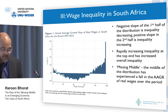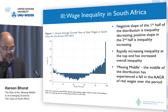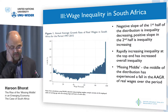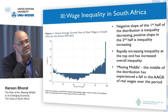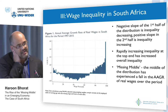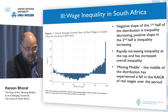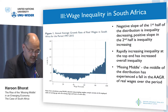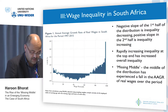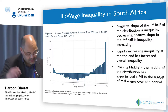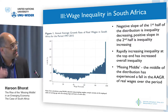Here is the statistical observation: the average annual growth rate of real wages for the period 1997 to 2015. There is a very strong and clear hollowing out in the middle of the distribution. You see the top end of the distribution seeing a significant increase in average annual growth rates, and the bottom end also seeing increases in wage rates.